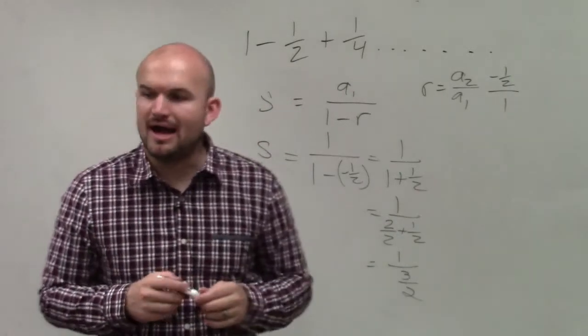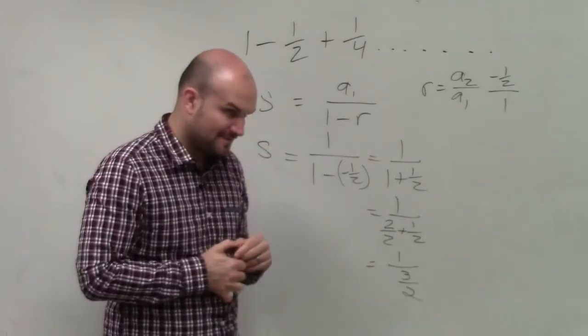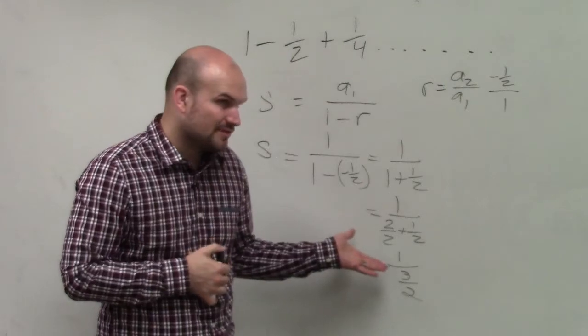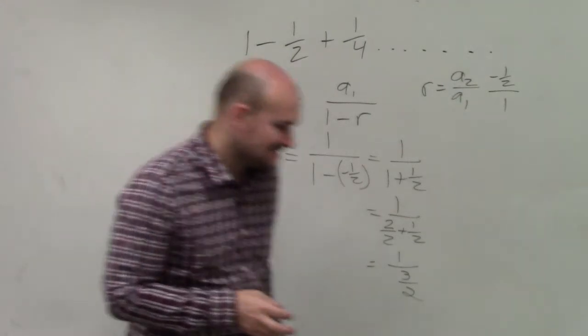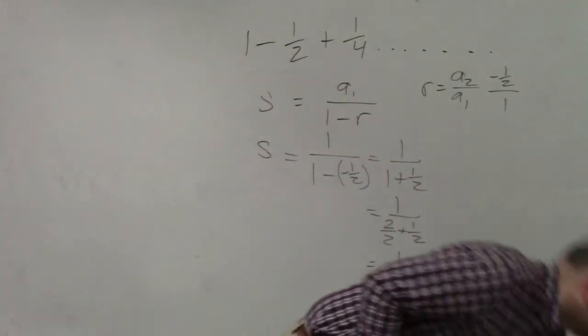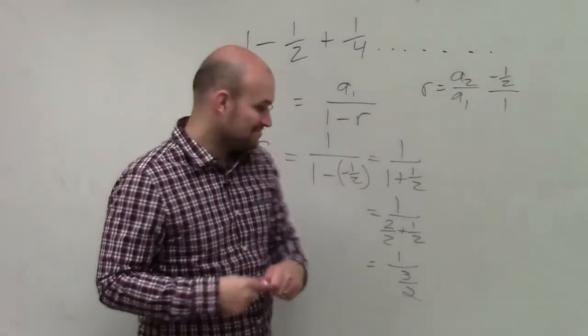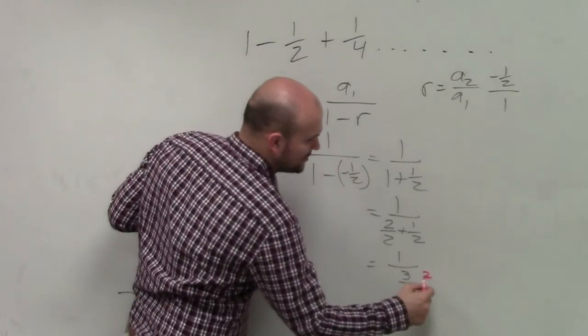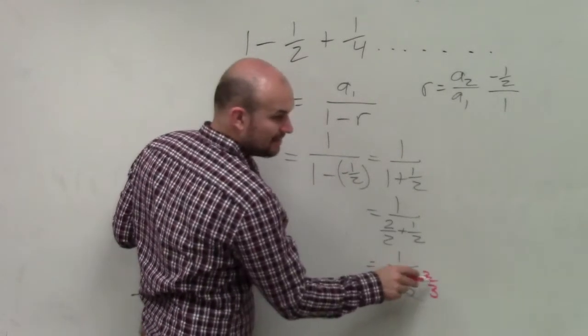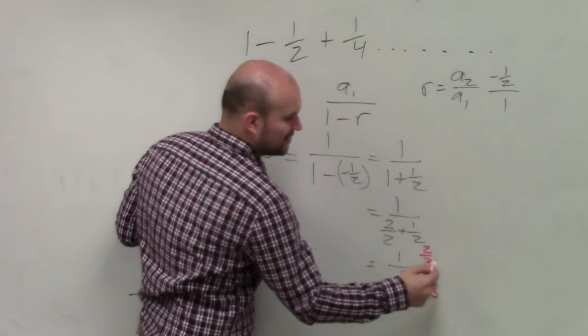So now I have 1 over 3 halves. Now, how do you get rid of the fraction in the denominator? The best thing is to multiply by the reciprocal. So if I multiply by 2 thirds in the denominator, I have to multiply by 2 thirds in the numerator.